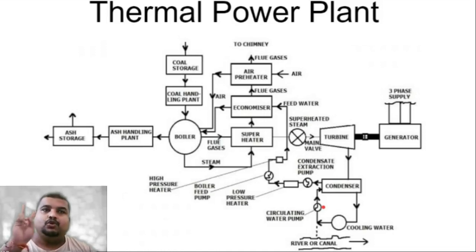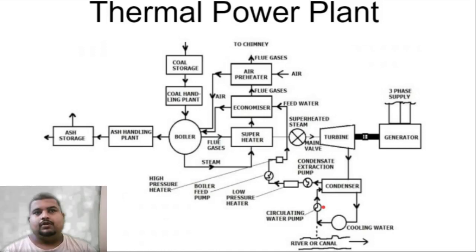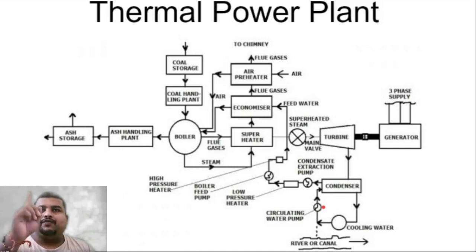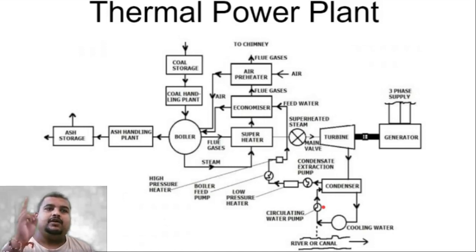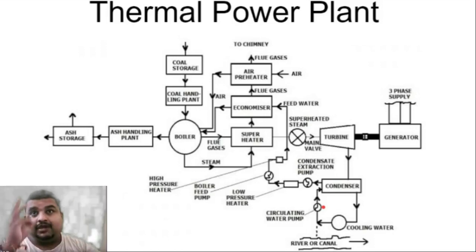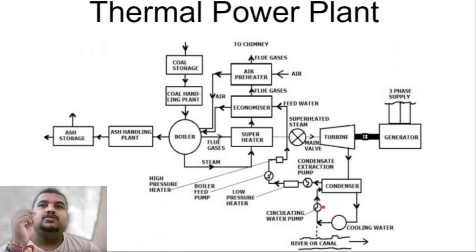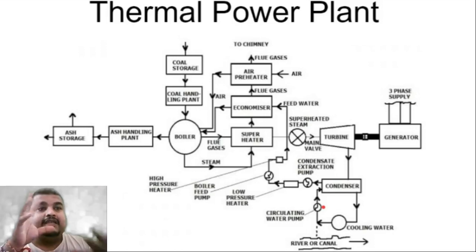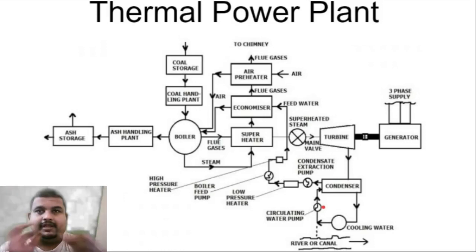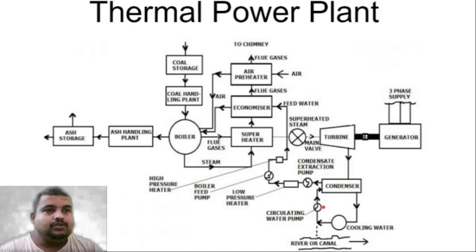For the burning process we require three things. First, the thing that is going to burn — that is fuel; we require a fuel. Second, we require oxygen, or we can say air. Third, we require an ignition system — something that will burn the fuel, that will ignite it.